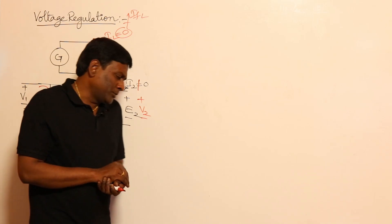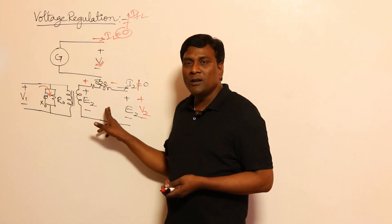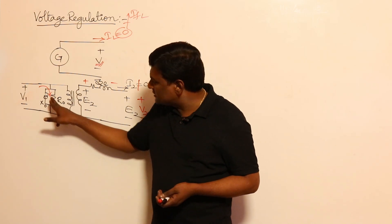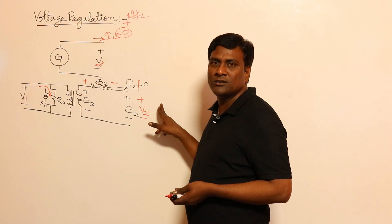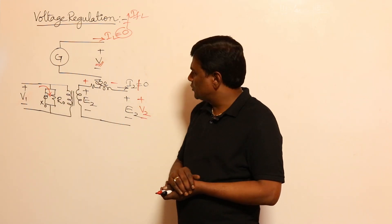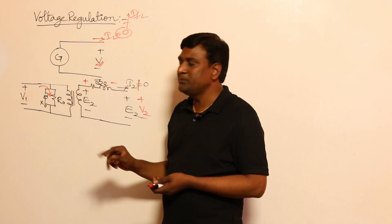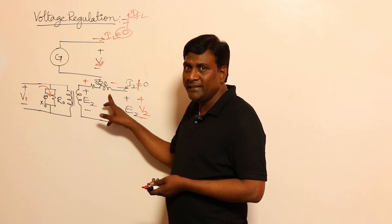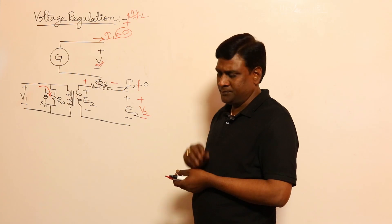In voltage regulation calculations, the shunt branch will not play any role. Voltage variations across the secondary are not caused by shunt branch current. So the shunt branch is not considered at all. Only the series branch — the leakage impedance drop — influences the terminal voltage variations. This part is sufficient for our voltage regulation analysis.